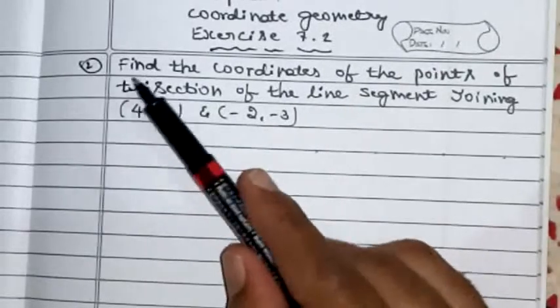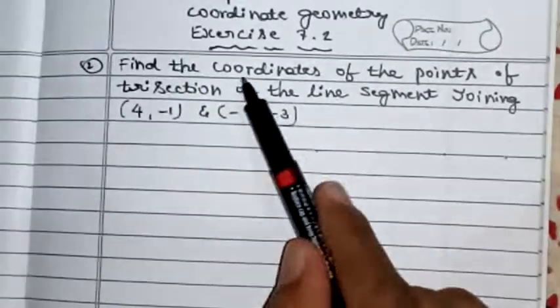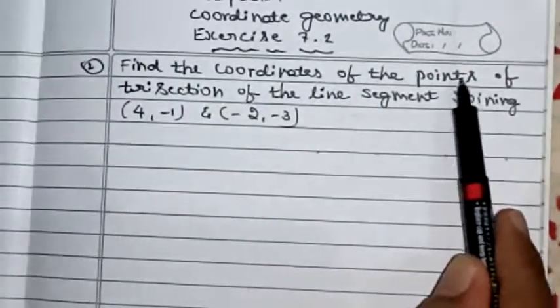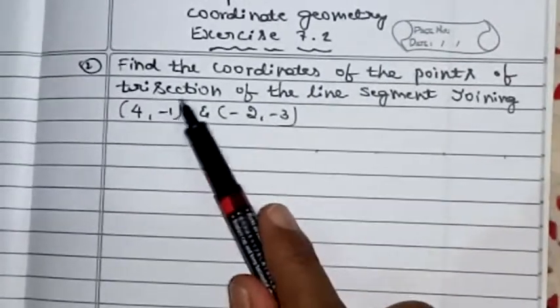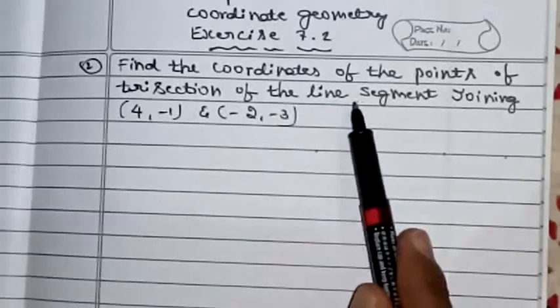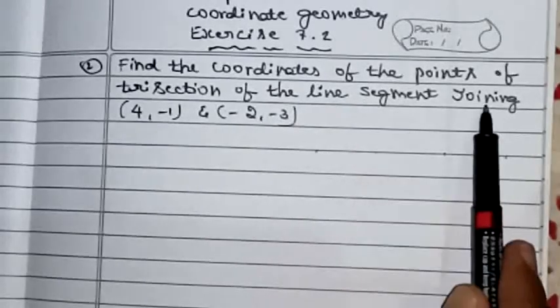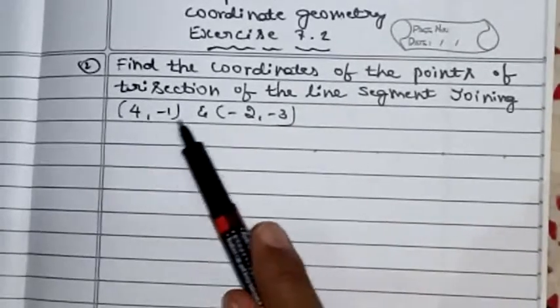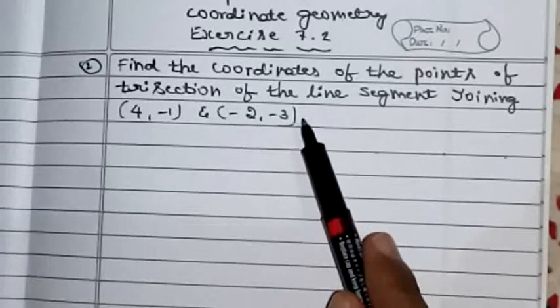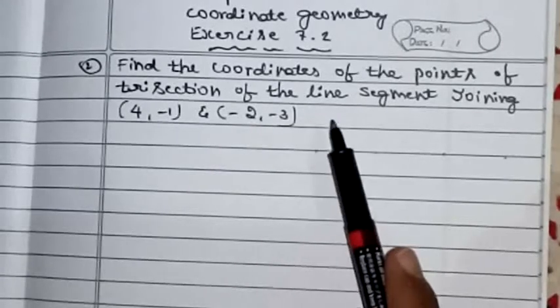The question is: find the coordinates of the points of trisection of the line segment joining (4, -1) and (-2, -3).